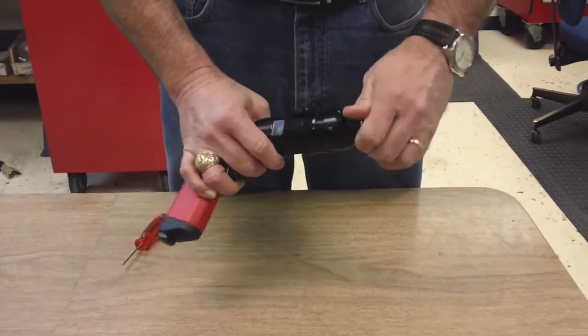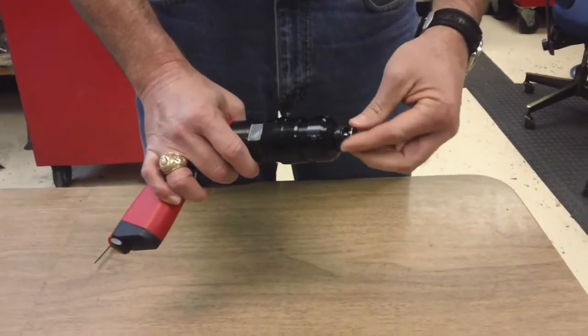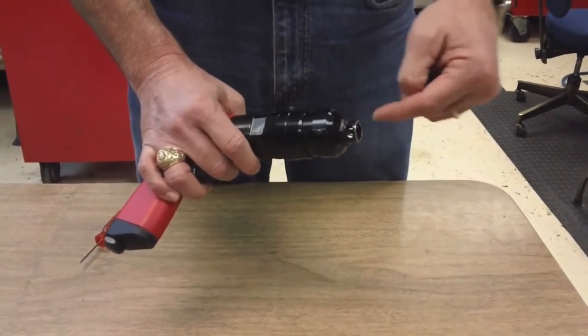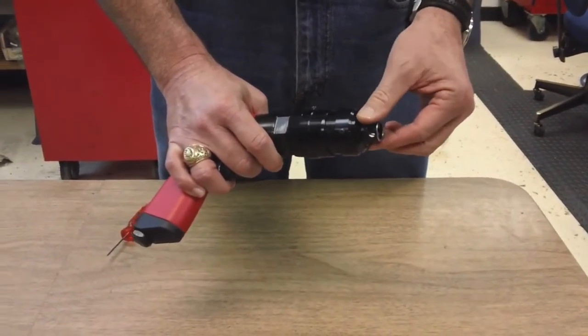And one of the things that you'll notice is this is a left hand thread skirt, and the reason we did that is because when the tool vibrates, it won't vibrate loose and affect the shaving depth. It'll stay tight.